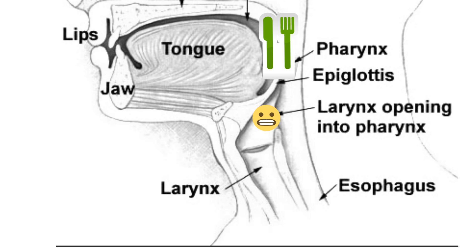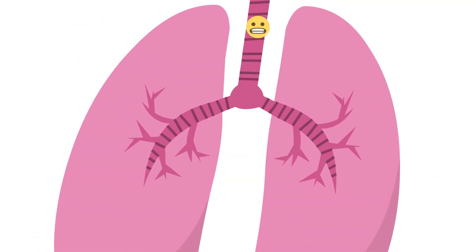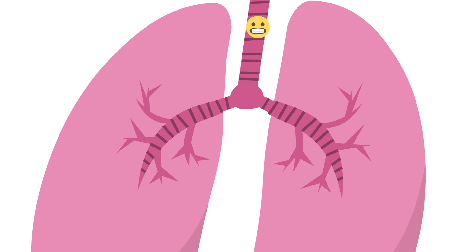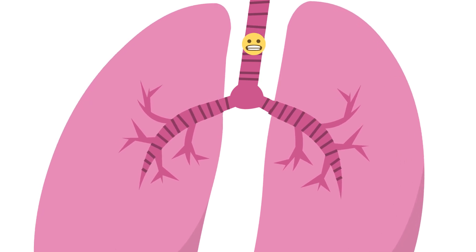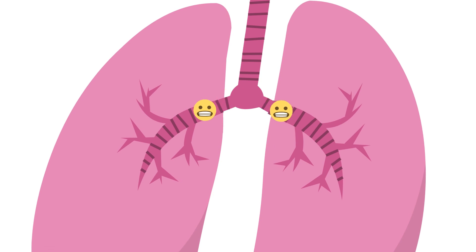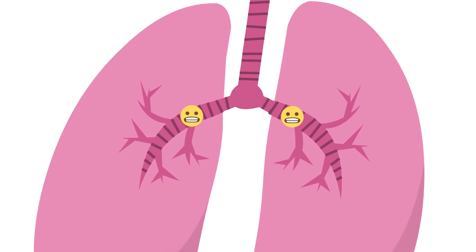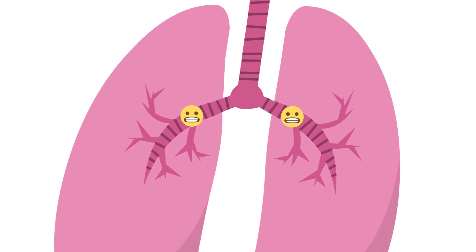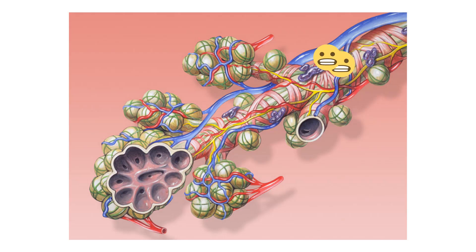From the larynx, air travels to the trachea, which is a rigid tube of cartilage. The trachea then leads into two tubes called the left and right bronchus. These tubes continue to branch until you reach a very tiny air sac called an alveoli.